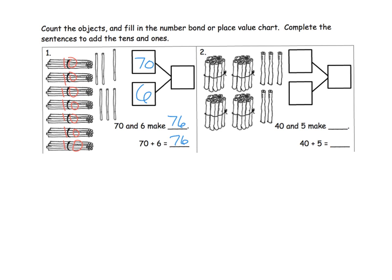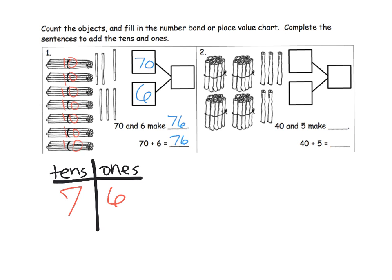And 70 plus 6 is 76. If we wanted to show what that would look like in our place value chart: we've got our place value chart with our 10s here and our 1s here. How many 10s do we have? We have 7 tens. And how many 1s do we have? We have 6 ones. So our number is 7 tens and 6 ones, which is 76. 7 tens plus 6 ones — I should put 76 right there.